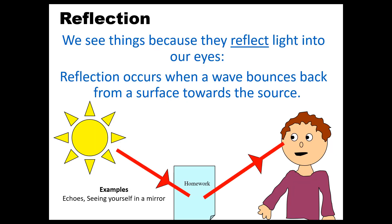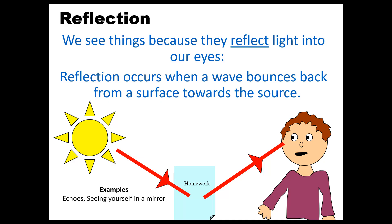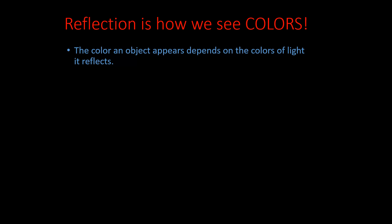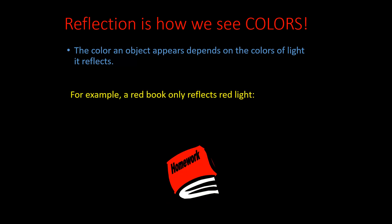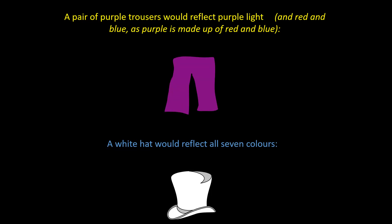With reflection, you need to understand that we see things. The things that we see, the colors that we see, are a result of the reflection of those materials to our eyes. So reflection occurs when a wave bounces back from a surface towards a source. Now, because we have that bouncing of waves, we have angles made in those waves, and so we're going to talk about the law of reflection. Reflection is how we see color. So the color of an object appears, depending on the color of light that it reflects.